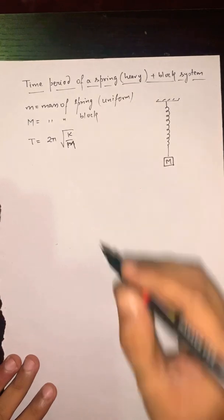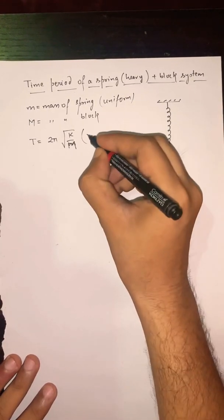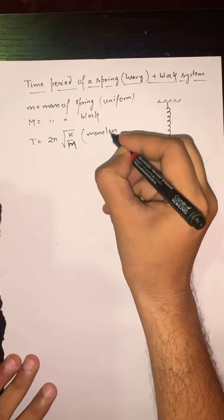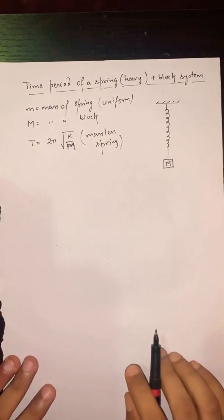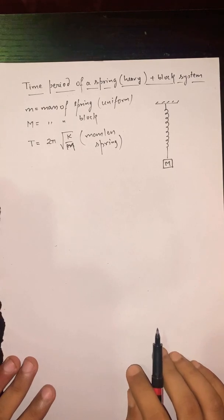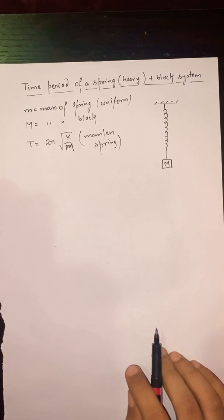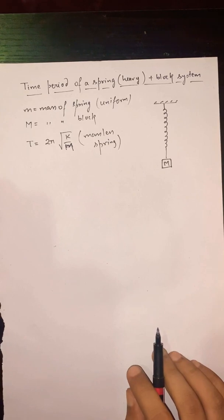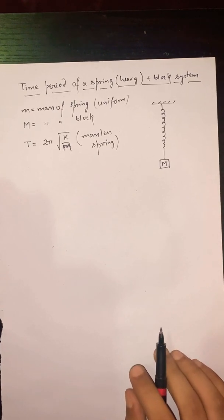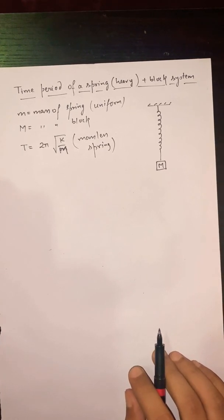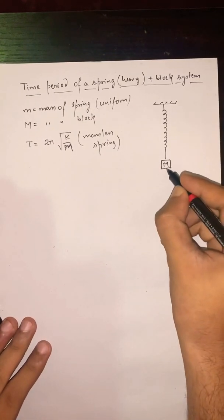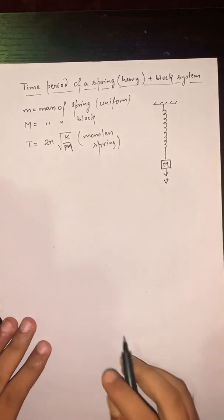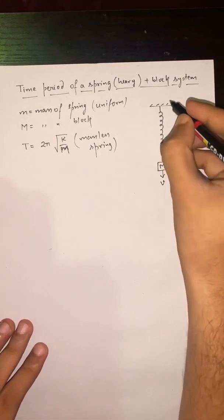In this video we will find out the time period when the spring contains mass of value small m. Let us consider at any instant the speed of the capital M mass is V.